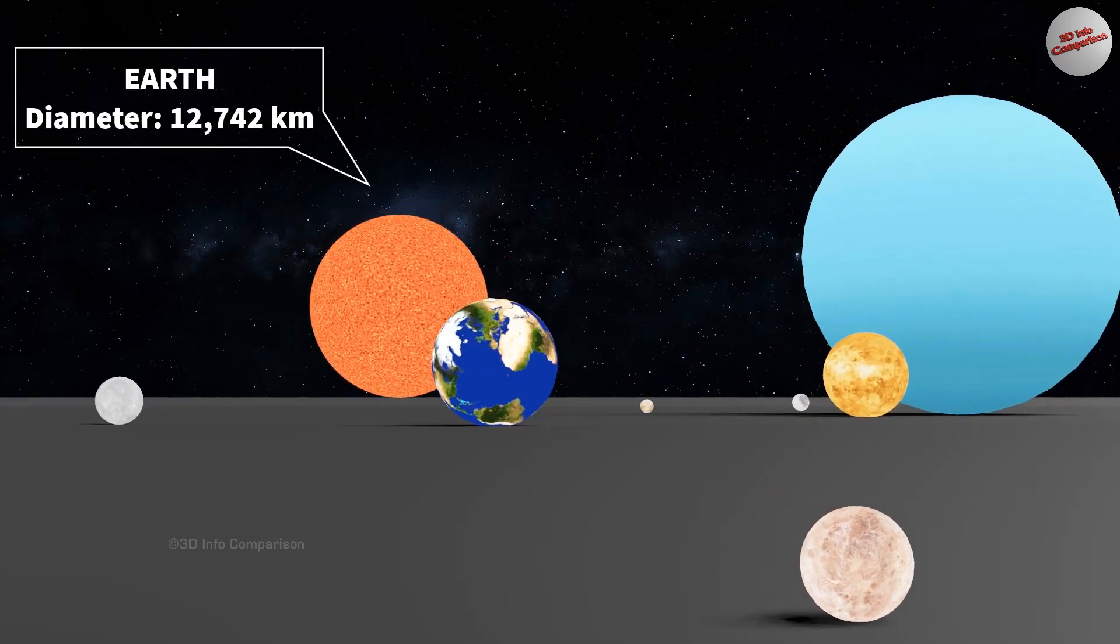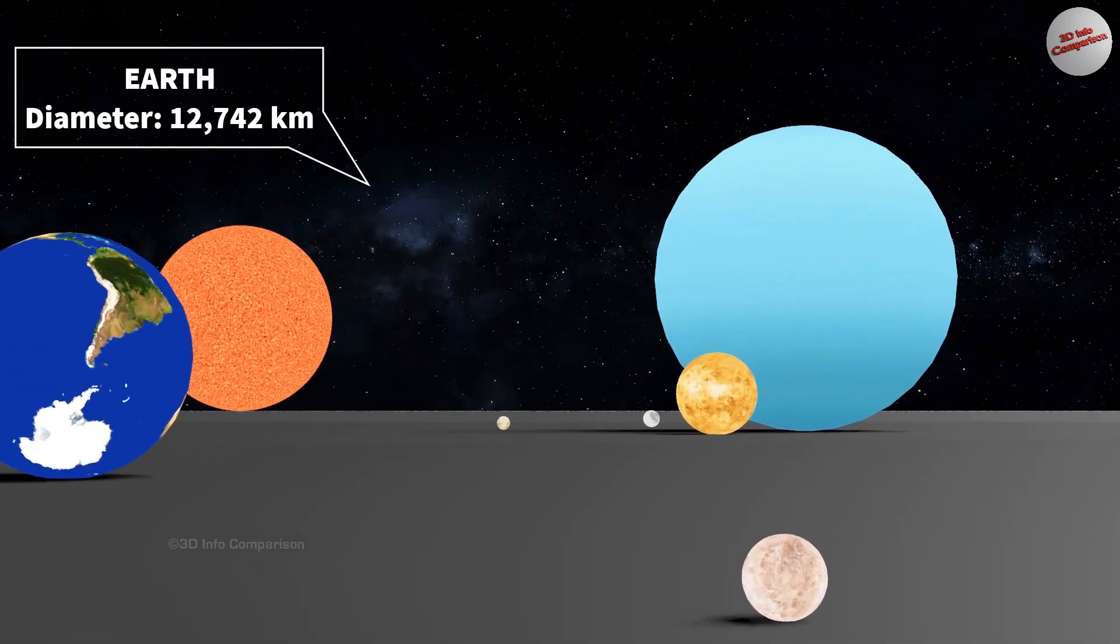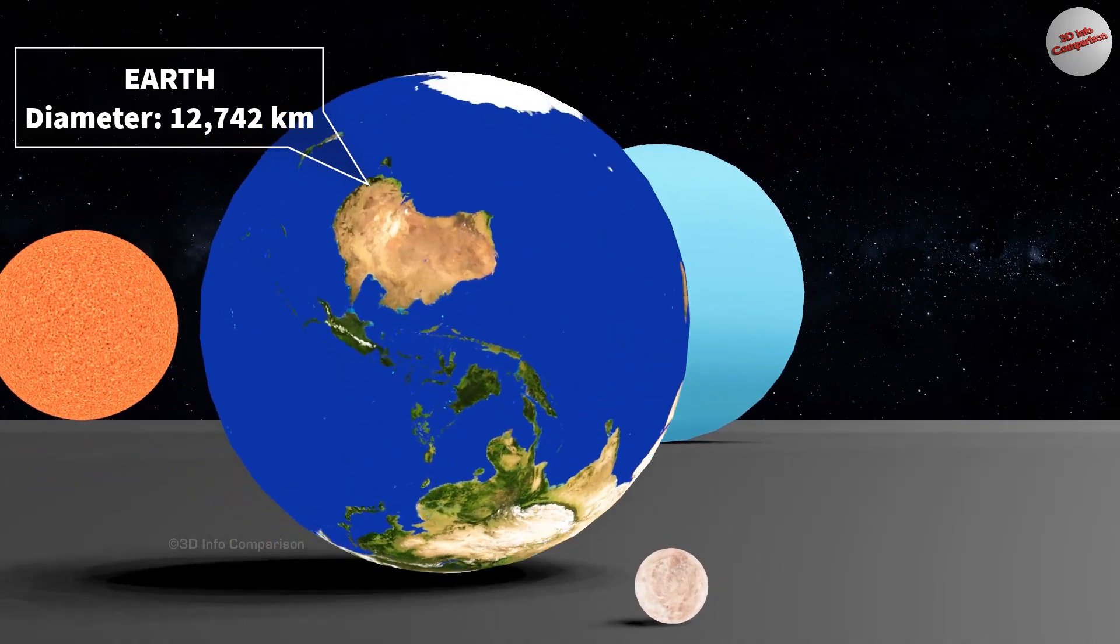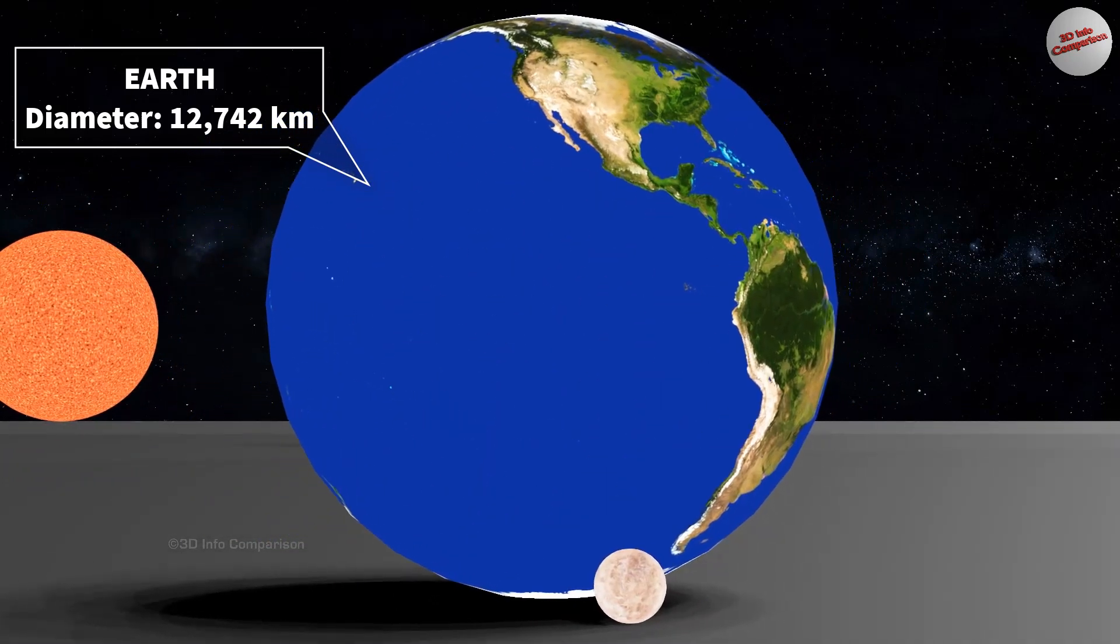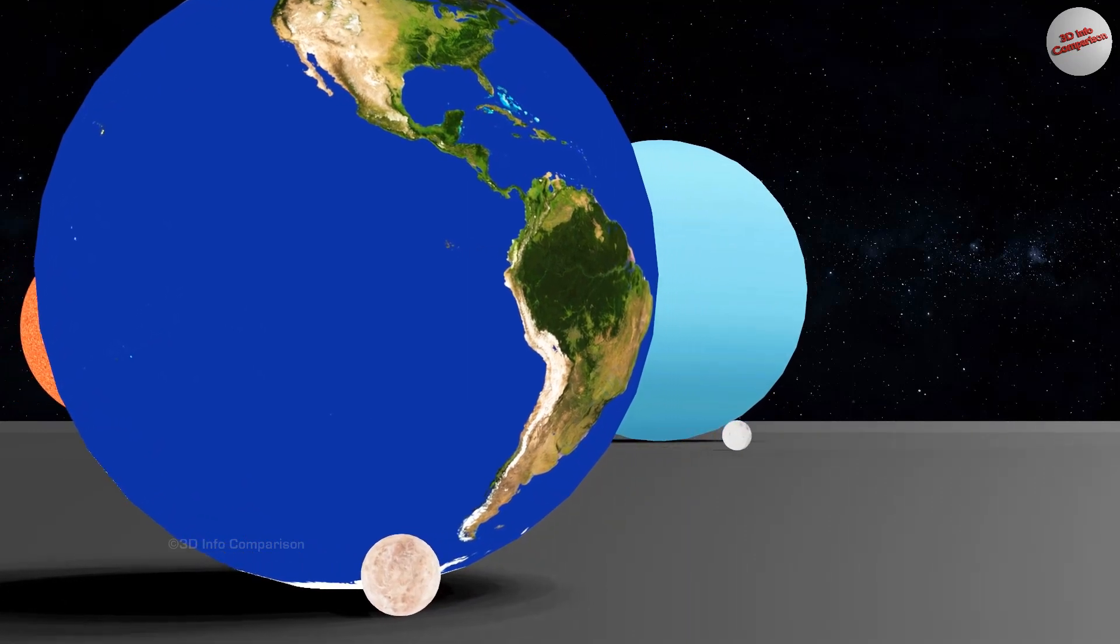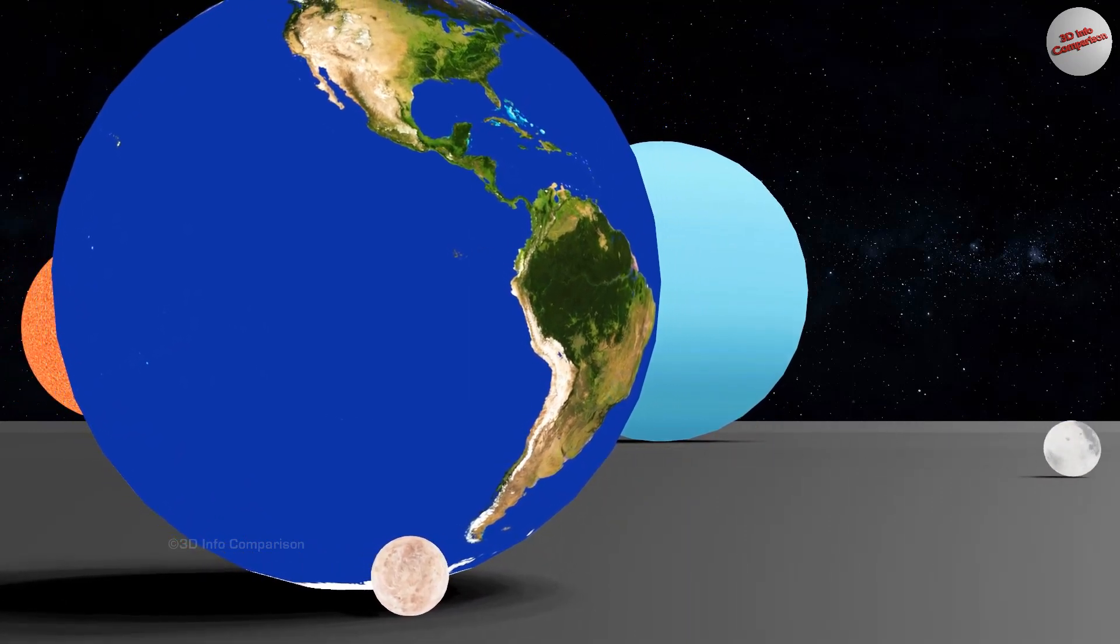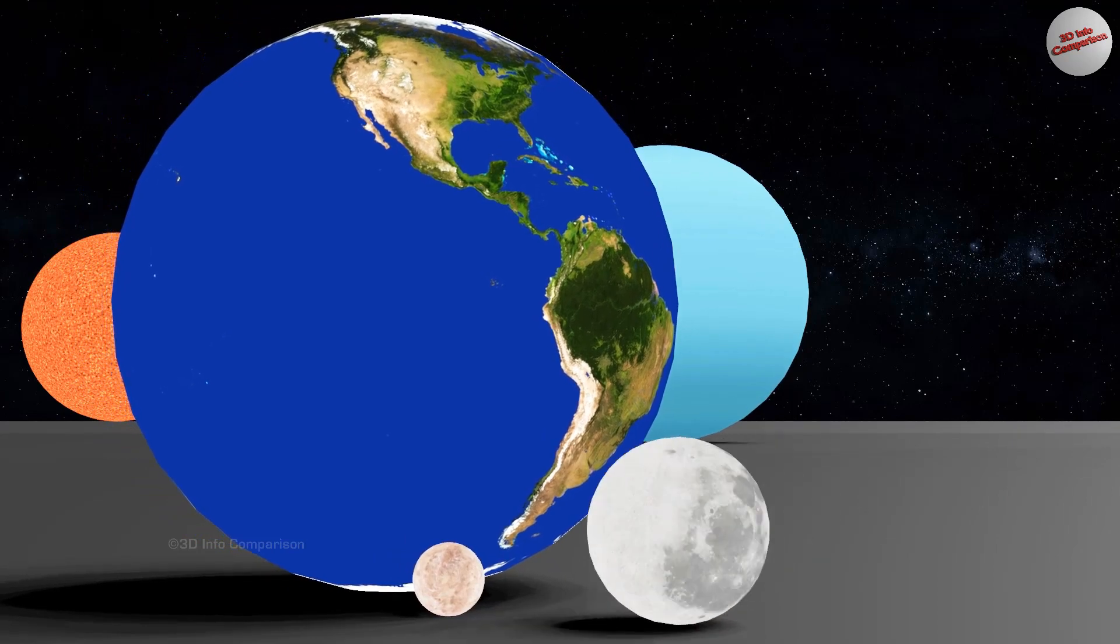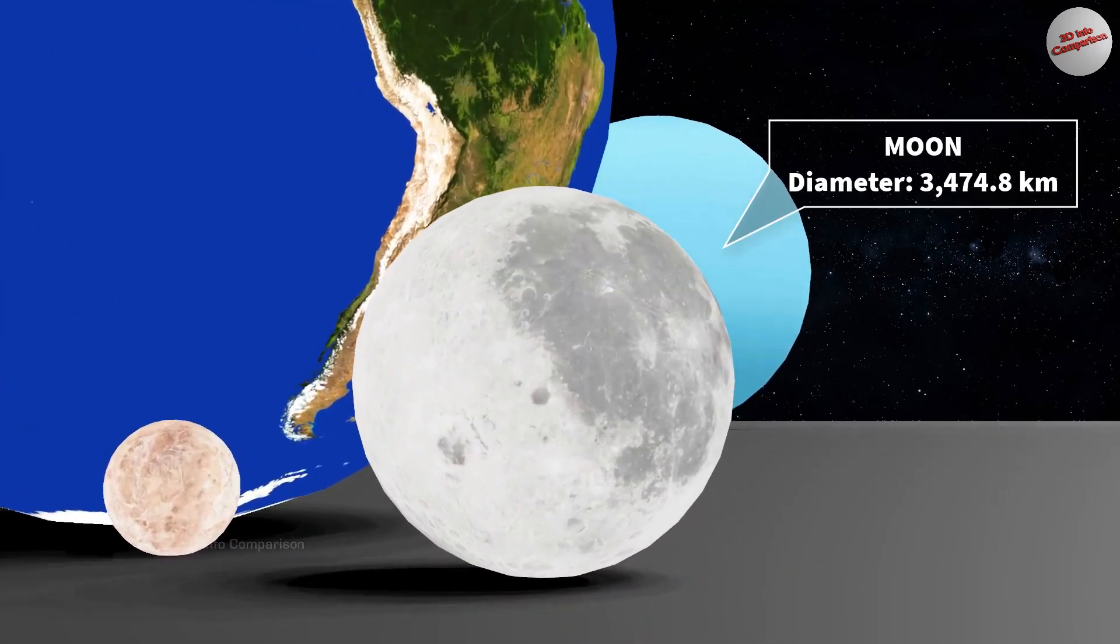The diameter of Earth is approximately 12,742 kilometers. In comparison to the Sun, Earth is significantly smaller. The diameter of the Moon is approximately 3,474 kilometers.